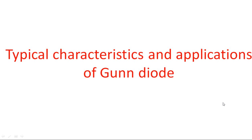In this video I am going to explain the typical characteristics and various applications of the Gunn diode. In a previous video I explained the construction of the Gunn diode, its working with graphical representation — the graph drawn between J and E instead of V and I — and the Gunn effect and the two-valley theory that affects the operation of this Gunn diode.